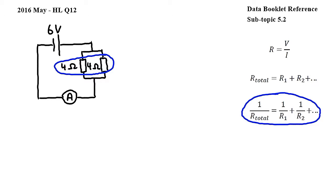Here R total is the combined resistance of the resistors, R1, R2 and so on are the individual resistances of the resistors. We are using this equation because these resistors are in parallel.